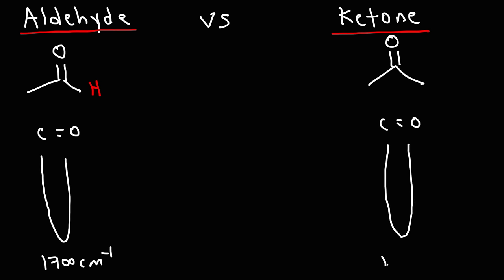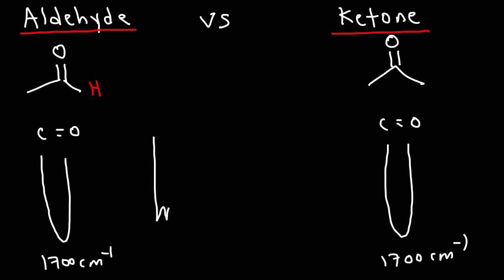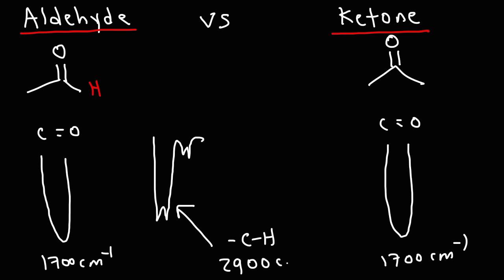The distinguishing feature between an aldehyde and a ketone is the CH stretch of the aldehyde. The alkane CH stretch typically shows up for almost all organic molecules that have a CH functional group, and that's around 2,900. But this part here identifies the aldehyde over the ketone — the aldehyde will have a signal of around 2,700 centimeters to the minus 1.